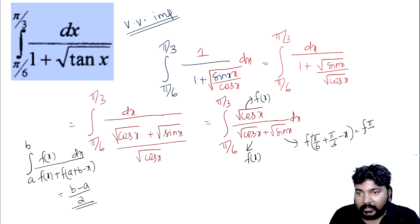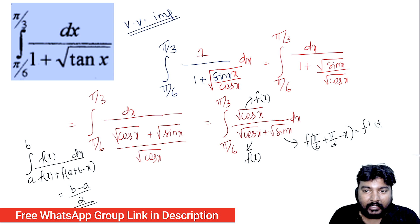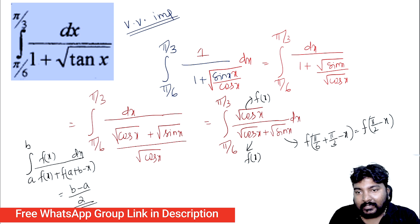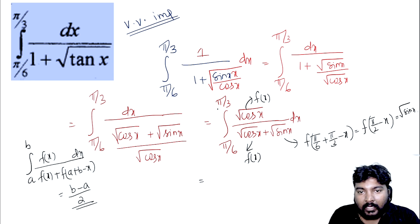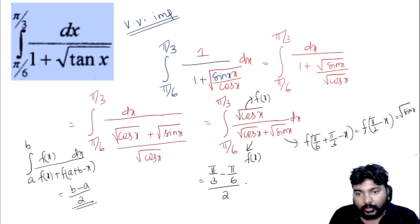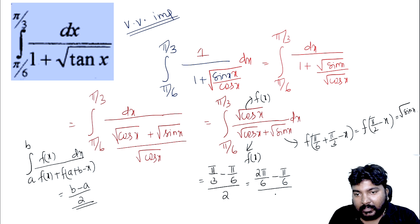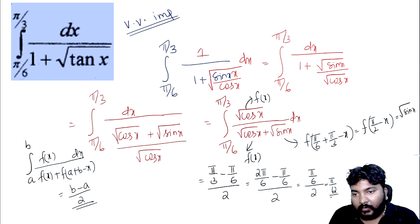So f of (π/6 plus π/3 minus x): since cos(π/2 minus x) equals sin x, the denominator becomes root sin x plus root cos x, which is symmetric. The result is (upper limit minus lower limit) over 2 equals (π/3 minus π/6) over 2 equals (π/6) over 2 equals π/12.